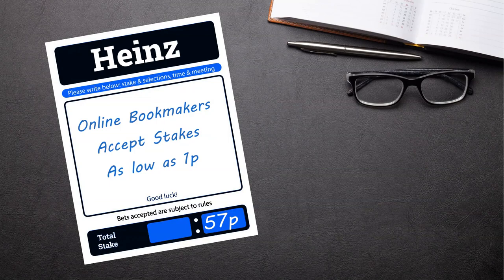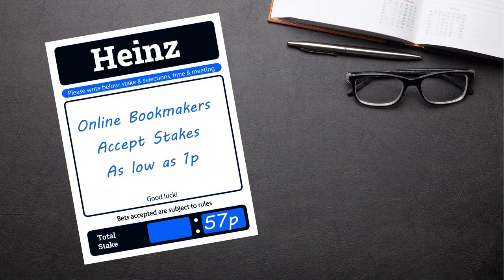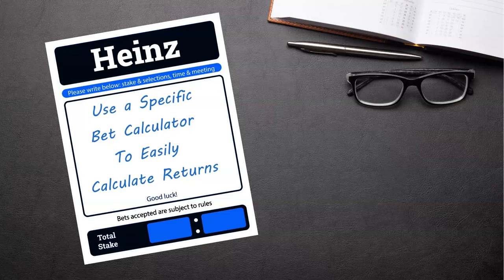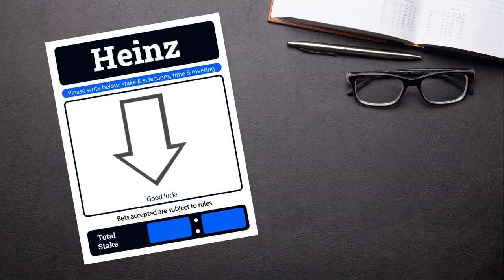A Heinz bet is fairly complex to calculate your winnings by hand. The easiest way to do it is to use a specific bet calculator. We have several free ones listed on the Racing Index website, see a link in the description below. These are able to work out all winning bets in one go.